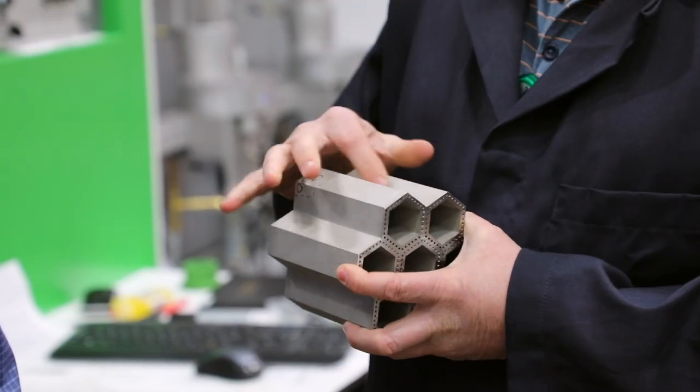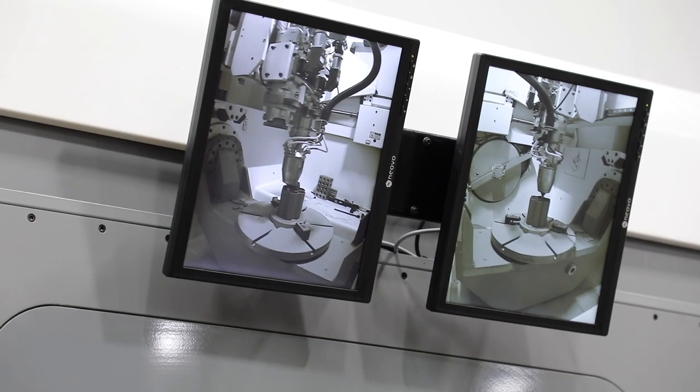The Transformational Challenge Reactor, or the TCR program, aims to apply additive manufacturing to manufacture a nuclear reactor core, a full core, and test this core by taking it critical and having it operate.